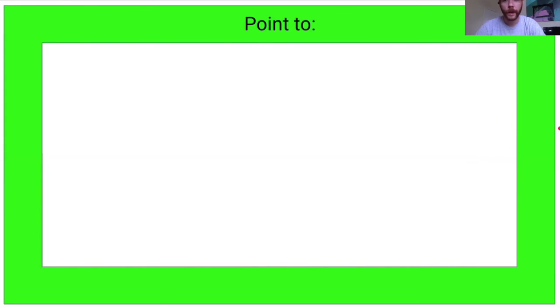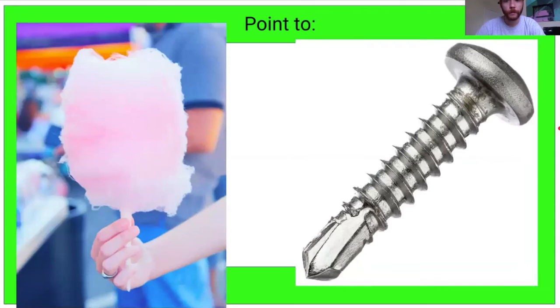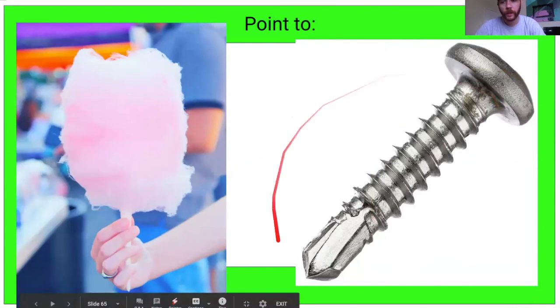Point to the one that's made of metal. Point to the one that's made of metal. Screws are made of metal because it's hard and sharp.